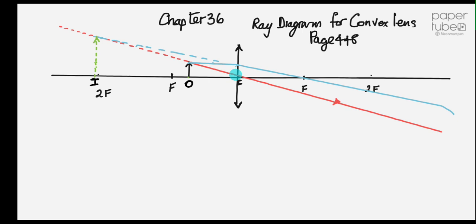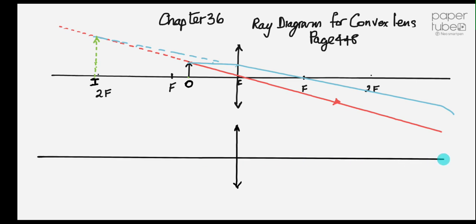Now I'm going to draw the second one. So there's my lens. I'm going to draw the principal axis. There's f and there's 2f, labeled. Now I'm going to look at part b — I'm going to put the object at f. There goes the object at f. Arrow, there's my object. The two rays now — we'll do a red one. A ray through the center is undeviated.